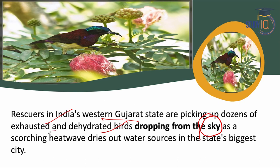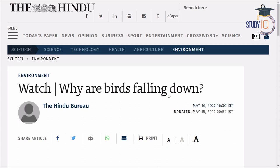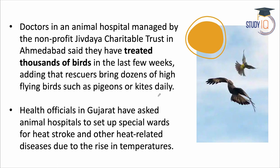One of the reasons is heat waves. Due to heat waves, water resources are scarce, and birds in the biggest cities are not getting water, which is why they are falling. In India, doctors in animal hospitals and non-profit charitable trusts in Ahmedabad have treated thousands of birds affected by heat waves.